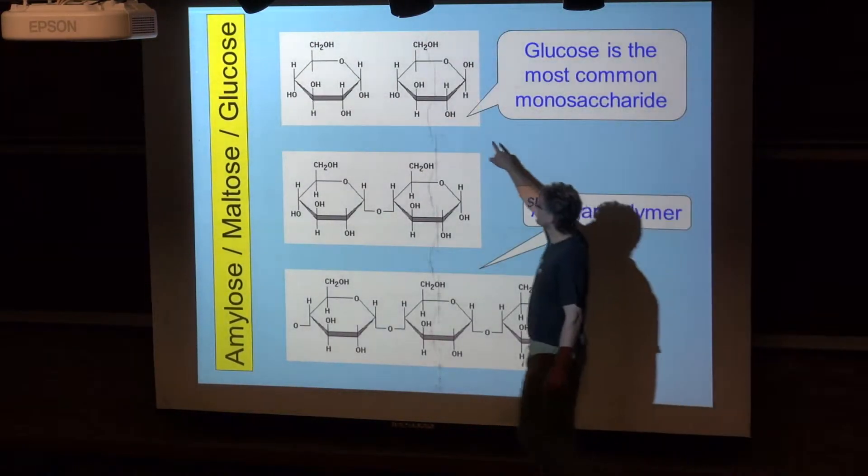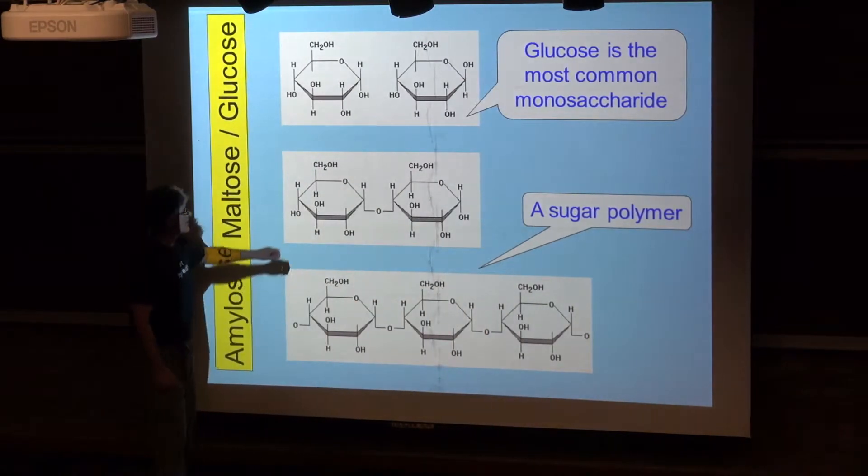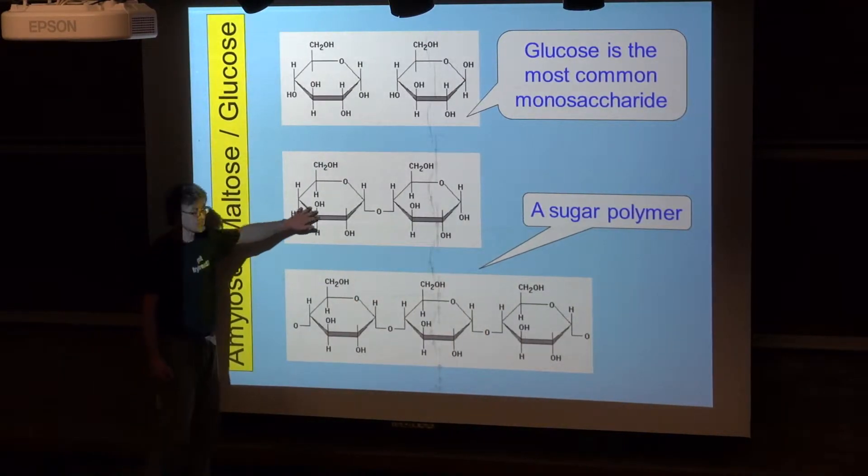So these are two monosaccharides. They're glucose. And this is maltose.